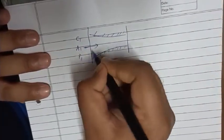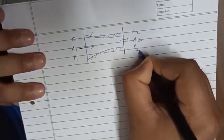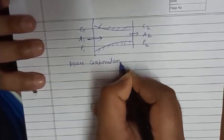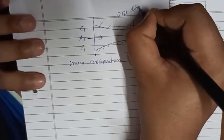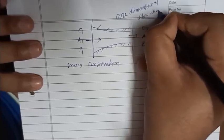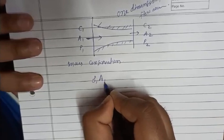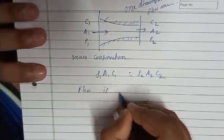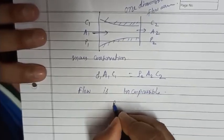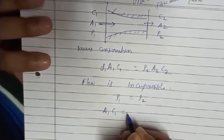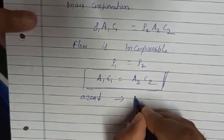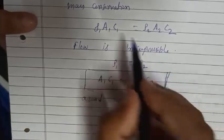Consider a converging passage with inlet velocity C1, area A1, pressure P1, and exit velocity C2, area A2, pressure P2. Applying mass conservation with one-dimensional flow assumption: ρ1·A1·C1 = ρ2·A2·C2. For incompressible flow, ρ1 = ρ2, so A1·C1 = A2·C2. This means area decrease leads to velocity increase — a basic fluid mechanics result.